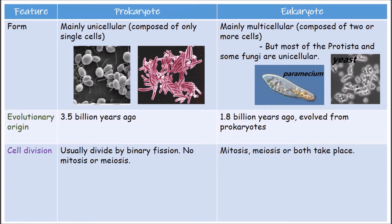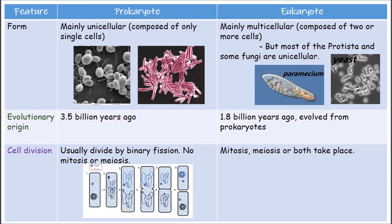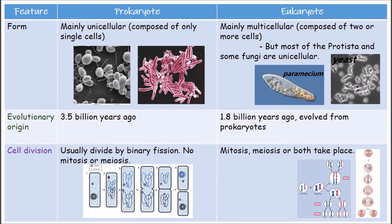Prokaryotic cells evolved around 3.5 billion years ago, while eukaryotic cells evolved from prokaryotes about 1.8 billion years ago. Prokaryotic cells divide by binary fission — no mitosis or meiosis is needed because prokaryotic cells contain only one set of chromosomes, meaning they are haploid. Eukaryotic cells may contain one or two sets of chromosomes, so they can be haploid or diploid; therefore mitosis, meiosis, or both take place in eukaryotic cells.